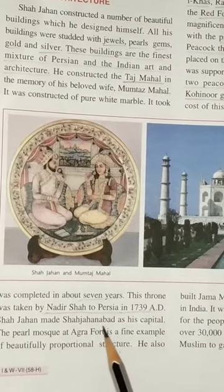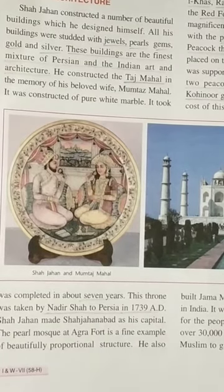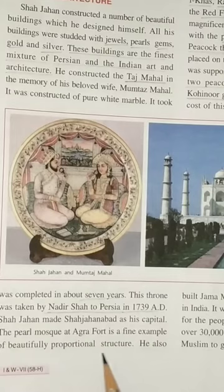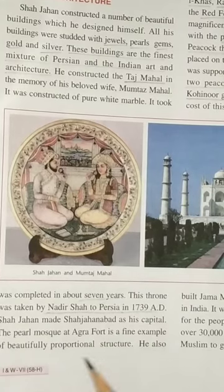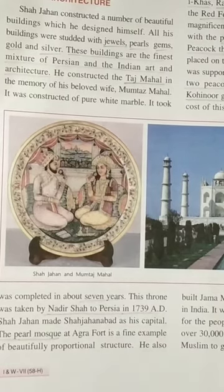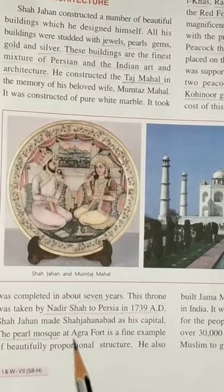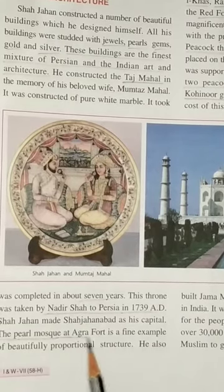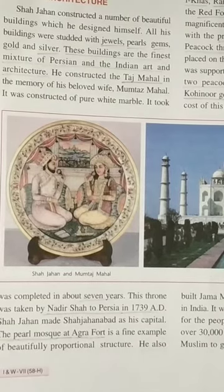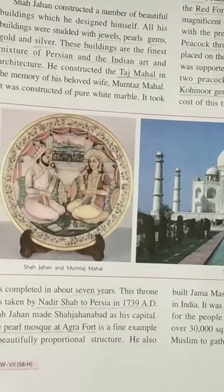Shah Jahan made Shah Jahanabad his capital. The Pearl Mosque at Agra Fort, known as Moti Masjid, is a fine example of a beautifully proportioned structure and is one of the most beautiful monuments built by Shah Jahan.